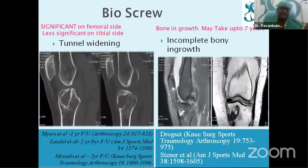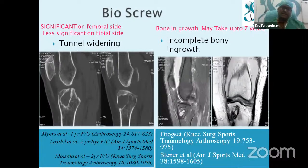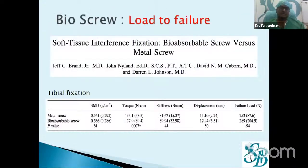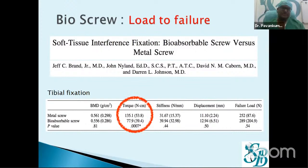Tunnel widening is found to be higher on the femur side compared to the tibial side, but it is definitely a risk to understand. Bone ingrowth into tunnels may take up to seven years with bio screws. Regarding load to failure, metal screws achieve significantly higher torque of insertion, which improves fixation — the higher the torque, the better the fixation. Metal screws score over bio screws in this regard.